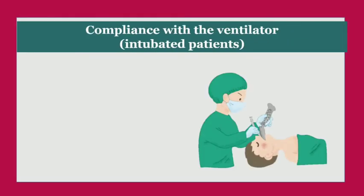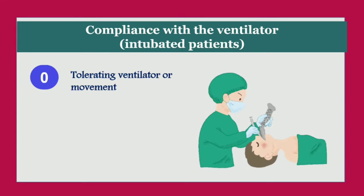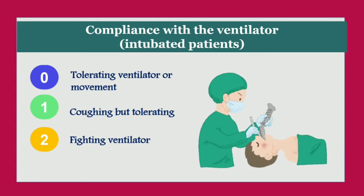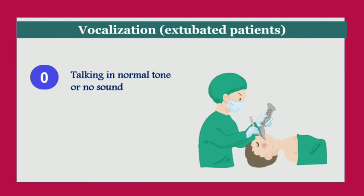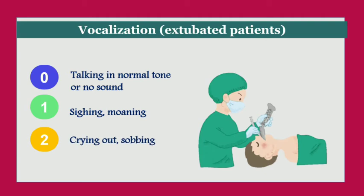The third parameter is complaints with the ventilator, classified for intubated and extubated patients. For intubated patients: score zero for tolerating the ventilator or movement, score one for coughing but tolerating the ventilator, score two for fighting the ventilator. For extubated patients: score zero for talking in a normal tone or no sound, score one for sighing or moaning, and score two for crying out or sobbing.